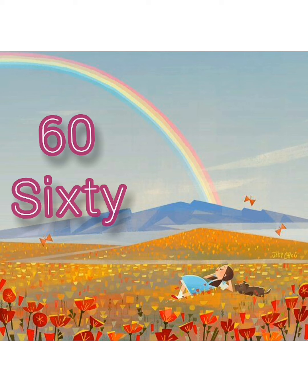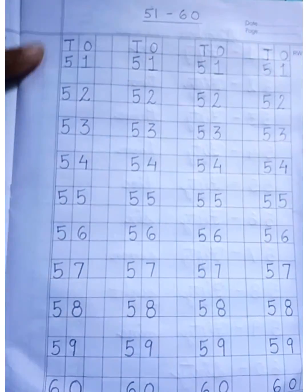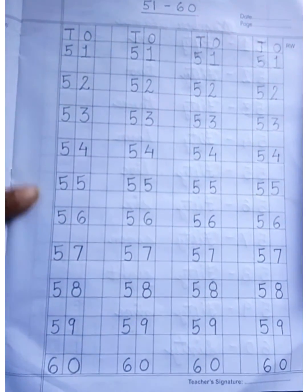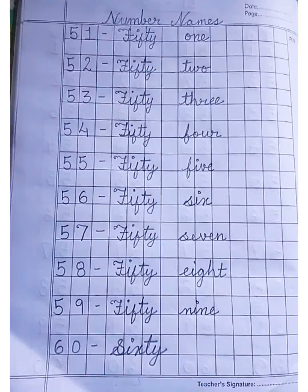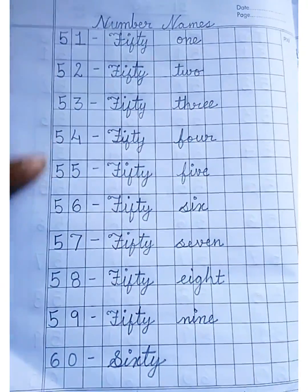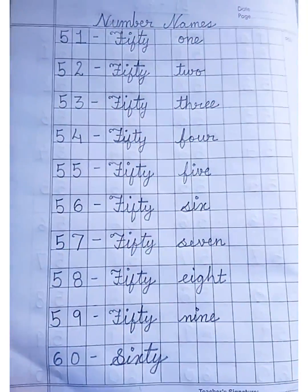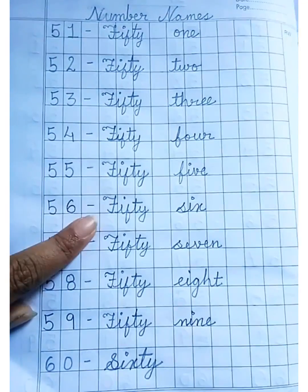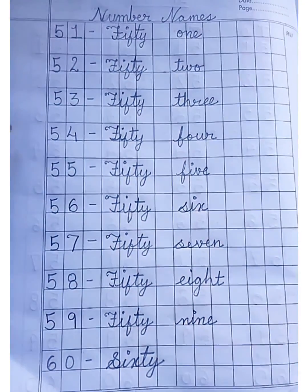60: S-I-X-T-Y — 60. Write 51 to 60 like this, and write number names 51 to 60 in cursive writing like this in your copy. Thank you, children.